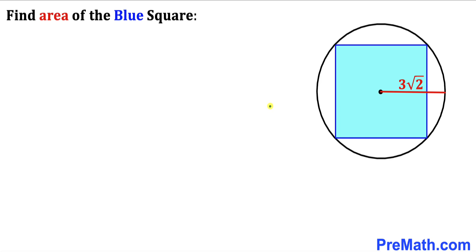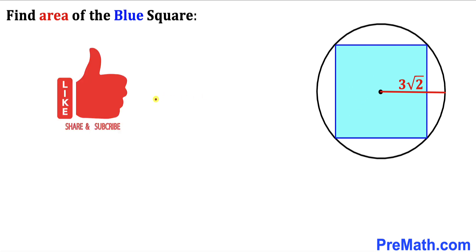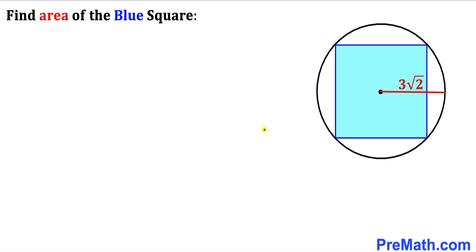Welcome to Pre-Math. In this video we have a blue square that is inscribed in a circle, as you can see in the diagram. The radius of this circle is 3 times the square root of 2 units. We are going to find the area of this blue shaded square. Let's go ahead and get started with the solution.